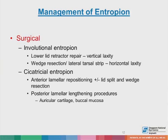For surgical management of involutional entropion — the most common type — we prefer to combine lower lid retractor repair to address vertical laxity with a wedge resection or lateral tarsal strip to address horizontal laxity. For cicatricial entropion, anterior lamellar repositioning with or without lid split at the gray line and wedge resection can be performed, and there is also a role for posterior lamellar lengthening with auricular cartilage or buccal mucosa.